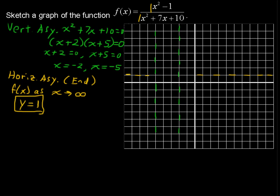The y-intercept happens when x equals 0. What is the value of y when we set x equal to 0? So you plug in 0 and that is 0 minus 1 over 0 plus 0 plus 10, which equals negative 1 tenth. So that's our y-intercept.